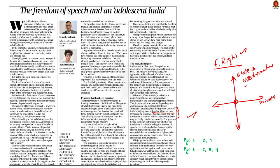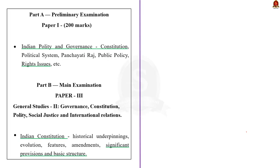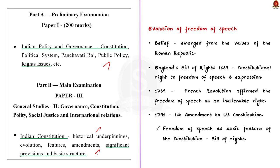The editorial article speaks about the evolution of freedom of speech and its horizontal and vertical application. It is believed that the idea of free speech may have emerged from the values of the Roman republics, as some sources say the Romans provided for freedom of speech and religion. The constitutional right to freedom of speech and expression was legally established by England's Bill of Rights in 1689. In 1789, the French Revolution reaffirmed freedom of speech as an inalienable right.